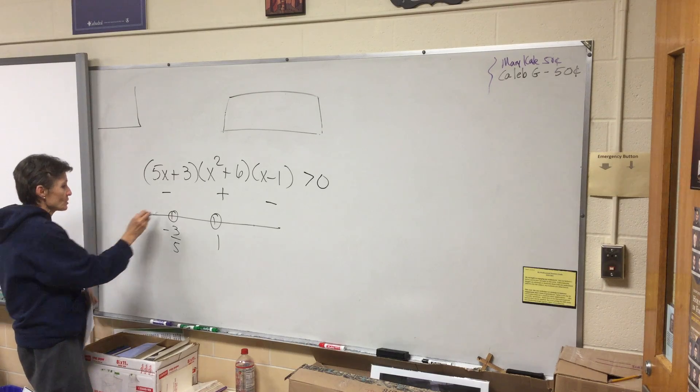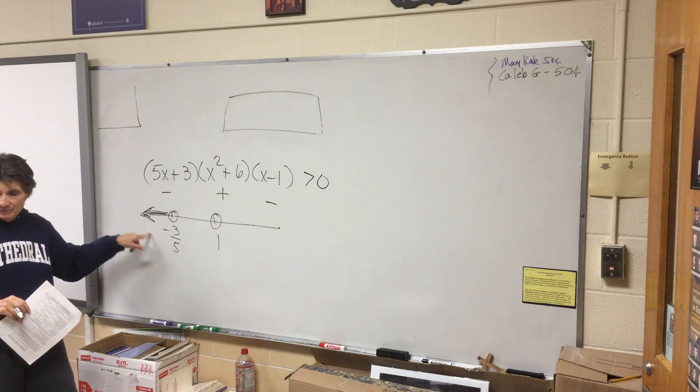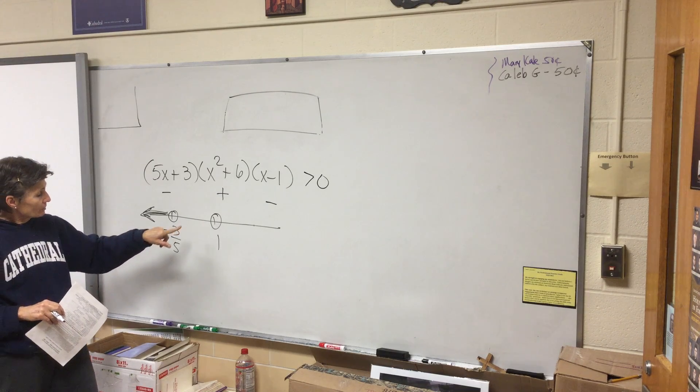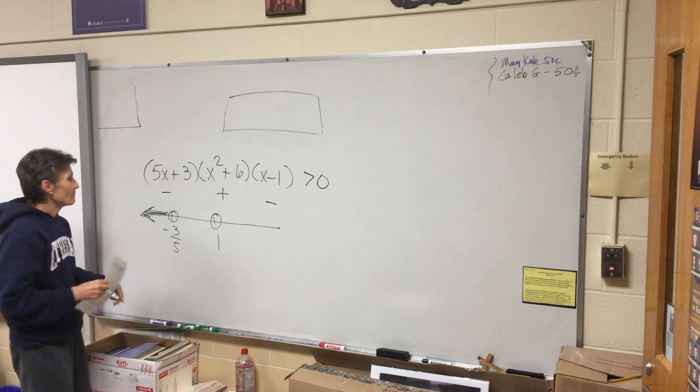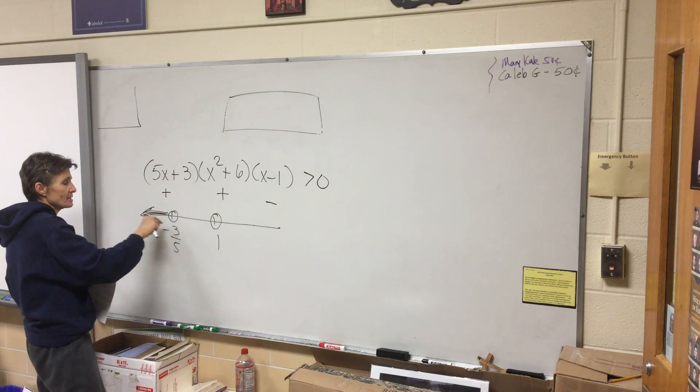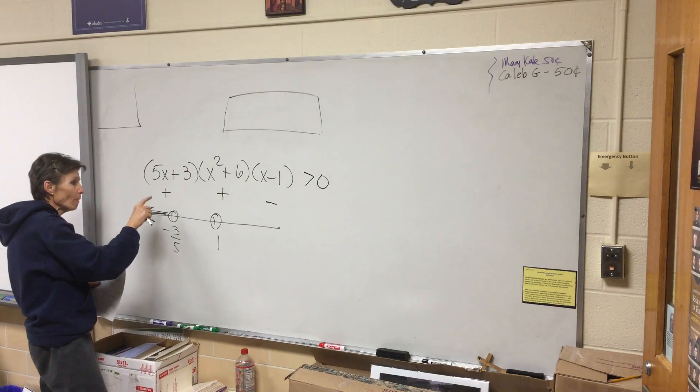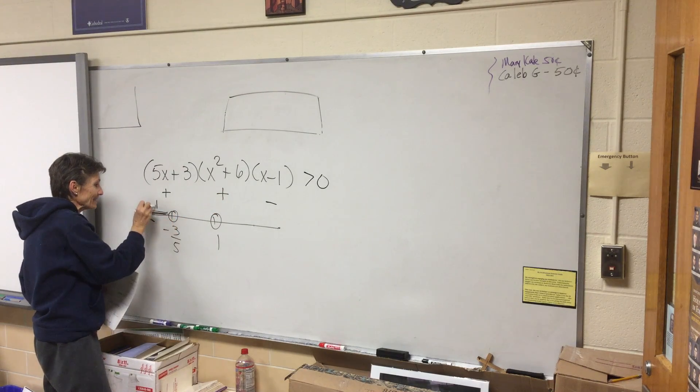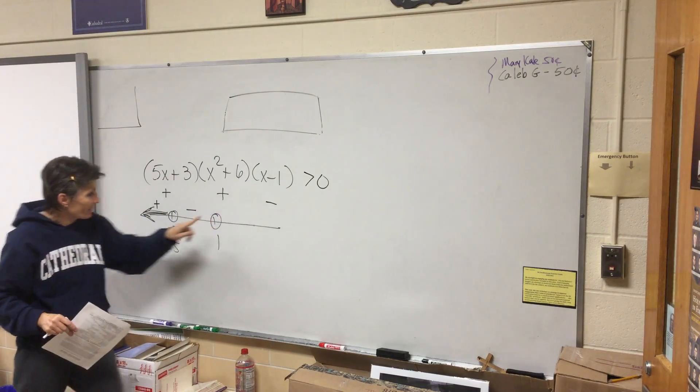If I multiplied a negative, a positive, and a negative, would that come out greater than zero? Yes. So that means if I'm looking for places where it's positive, that's one place. Now let's pick a number in here like zero.